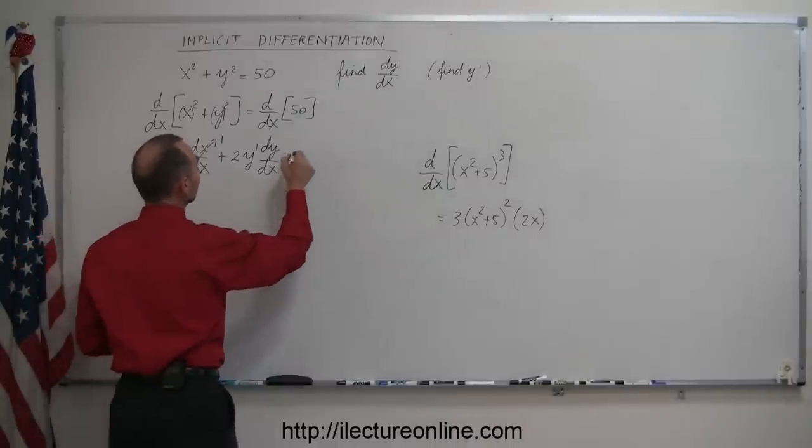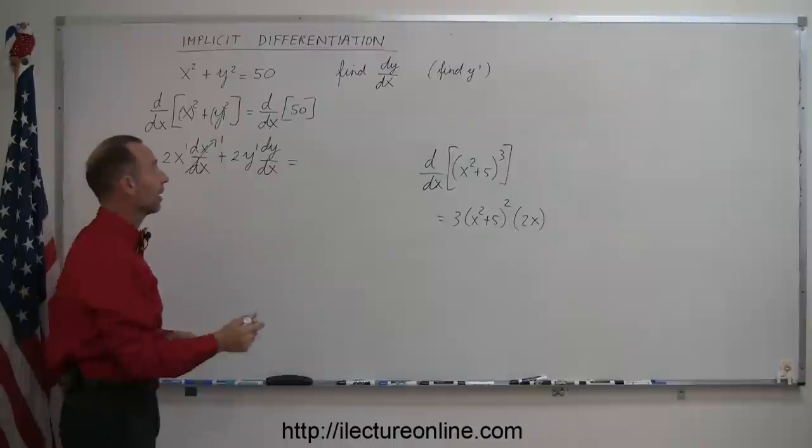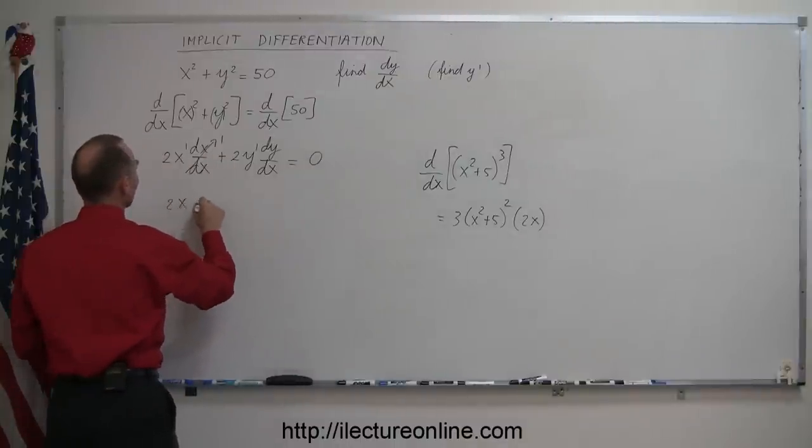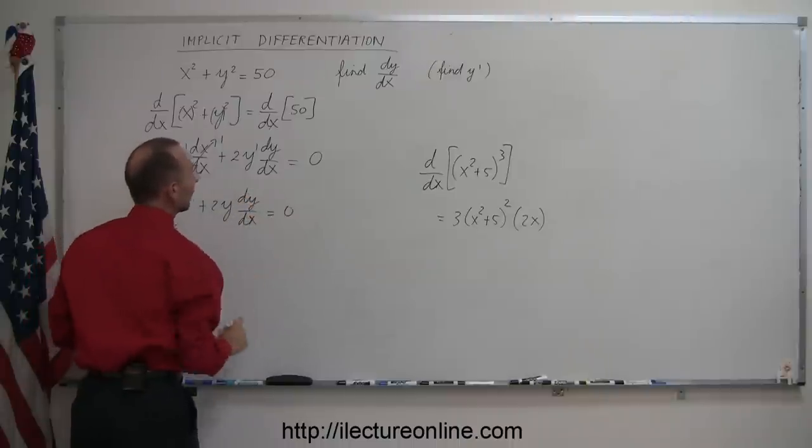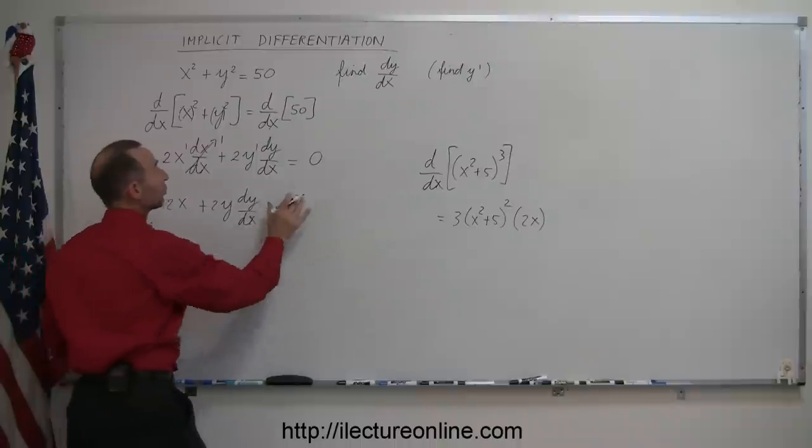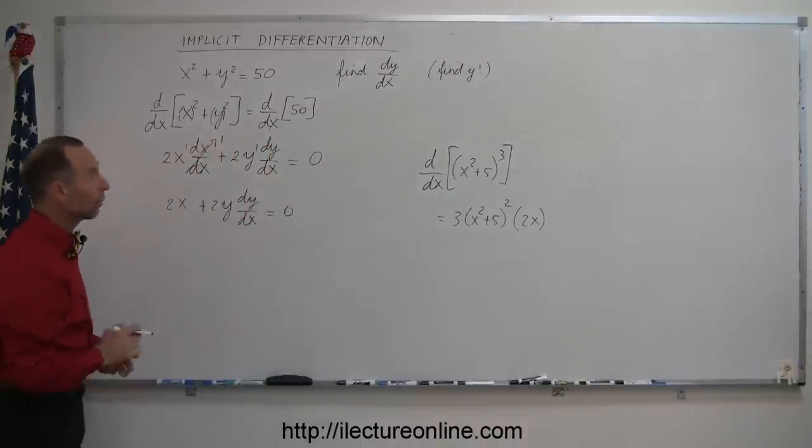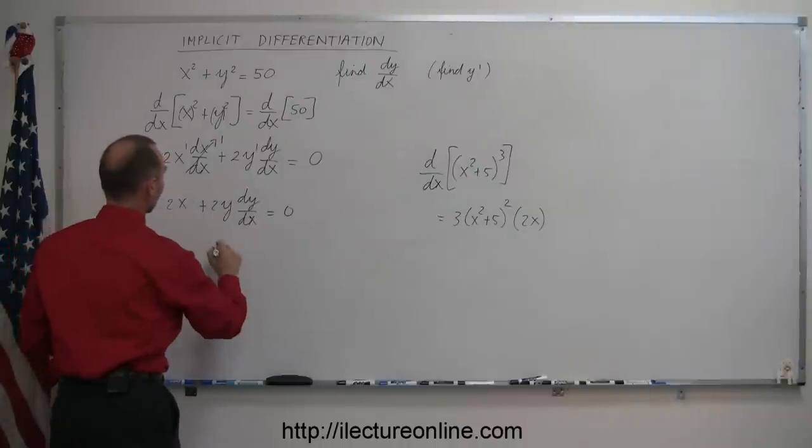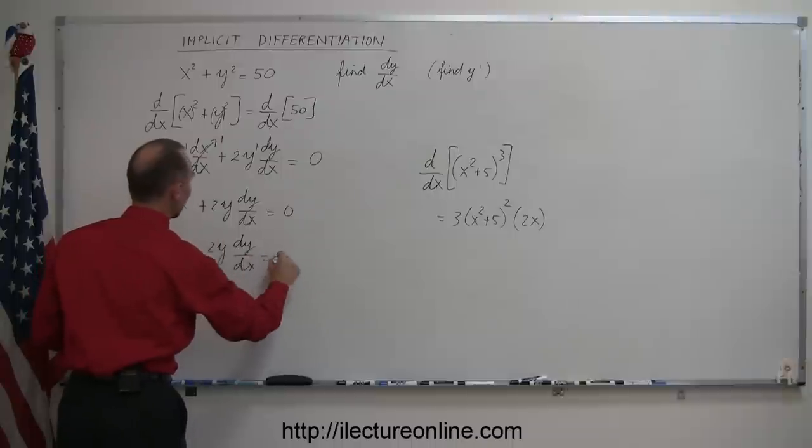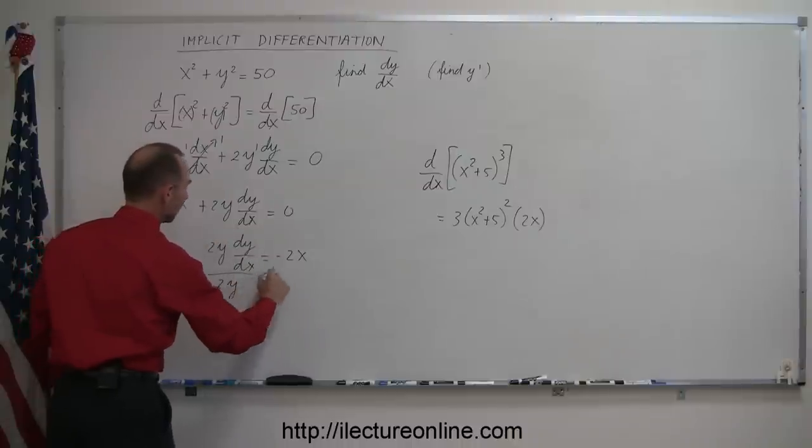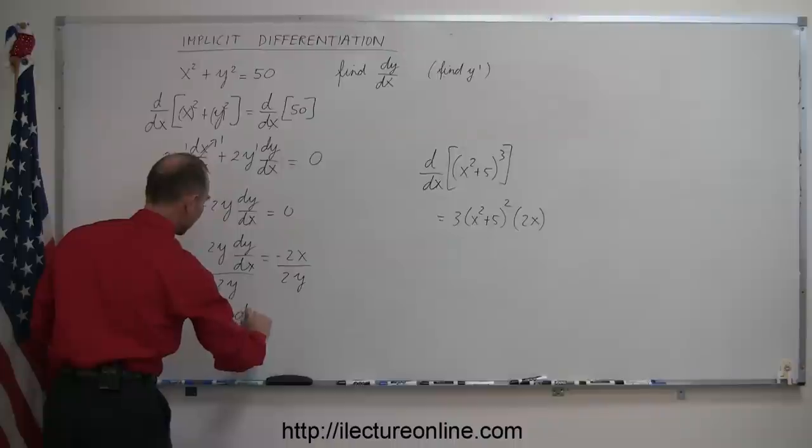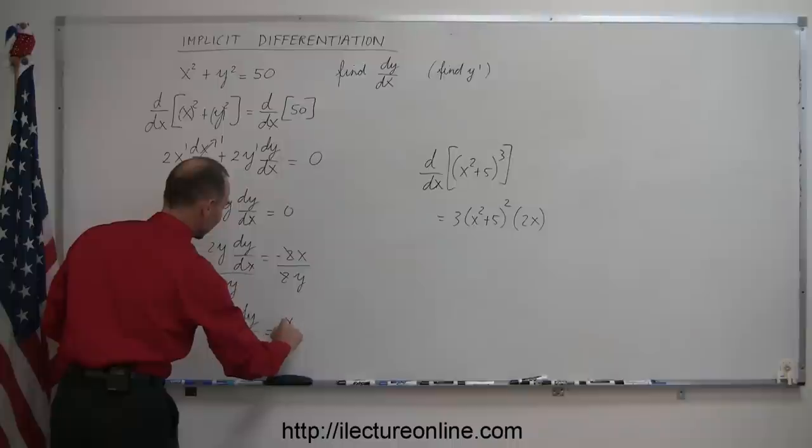And so that is equal then to the d/dx of 50, and of course, taking the derivative of a constant, that's equal to 0. So we end up with 2x + 2y dy/dx = 0. And now we have to algebraically solve for dy/dx, which is what we're trying to find, the derivative of y with respect to x. So that means I'm going to move my 2x to the other side. So we have 2y dy/dx = -2x. And then I divide both sides of the equation by the coefficient of dy/dx. So divide the left side by 2y, divide the right side by 2y, and so we get dy/dx is equal to, the 2's cancel out, -x/y.